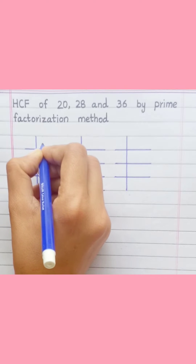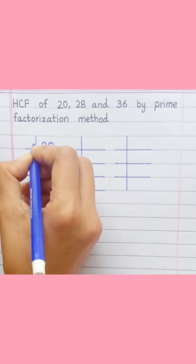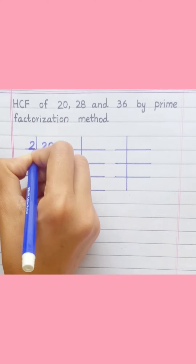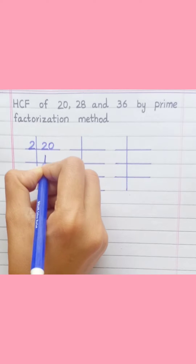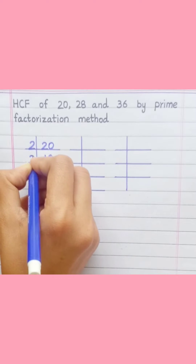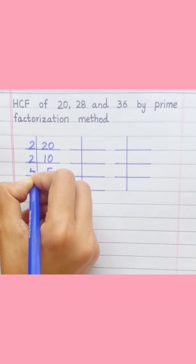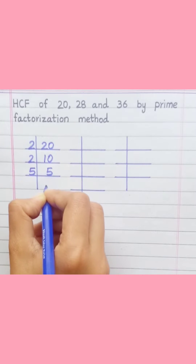20: 2 tens are 20, 2 fives are 10, 5 ones are 5. So the prime factorization of 20 is 2 × 2 × 5.